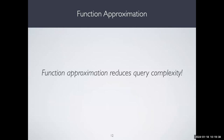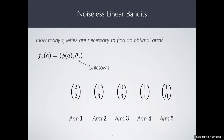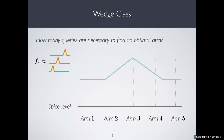What this means is that if I have an assumption on the function class that has some structure, that may reduce the query complexity — provided, of course, that structure is true in the problem I'm encountering in reality.